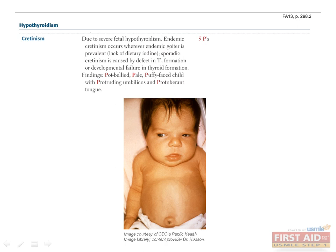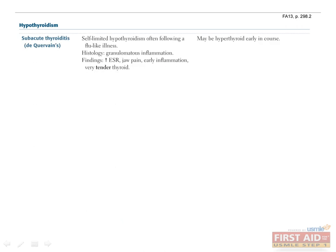To prevent iodine deficiency, table salt is iodized. The third form of hypothyroidism is subacute thyroiditis, previously known as de Quervain's thyroiditis. The distinguishing feature is that the thyroid is quite painful and tender. The disease typically occurs following a flu-like illness and is self-limited. Other findings include an elevated erythrocyte sedimentation rate (ESR), jaw pain, and granulomatous inflammation on histology. Like Hashimoto's disease, subacute thyroiditis may involve a brief period of hyperthyroidism at the beginning of disease onset.